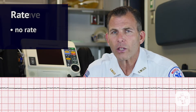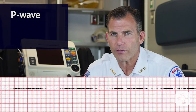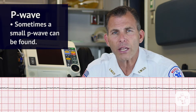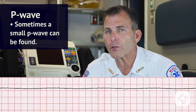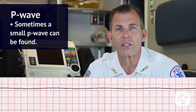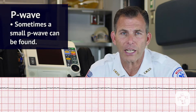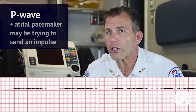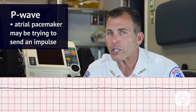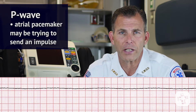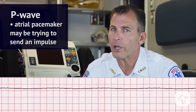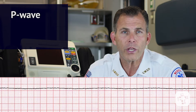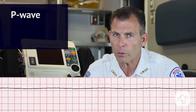Next we evaluate the P wave. Are they present? In some cases a small P wave can sometimes be seen, but it is not followed by any other waveforms. This can mean that in rare cases the atrial pacemaker may be trying to send an impulse but has no ventricular reaction. No other P wave findings will apply.